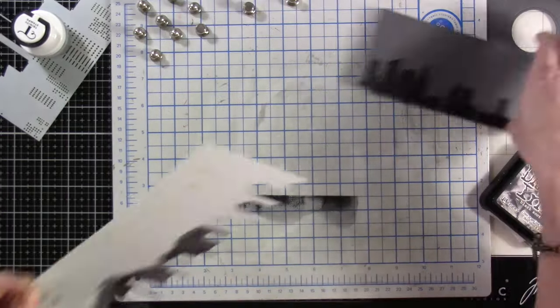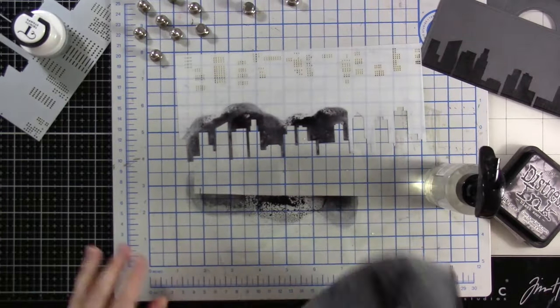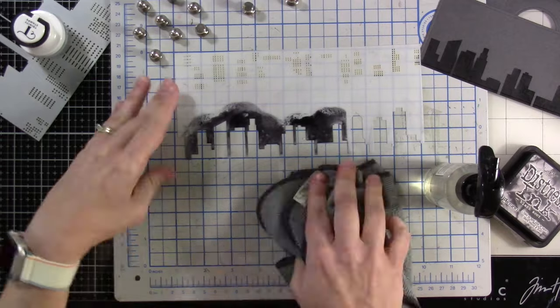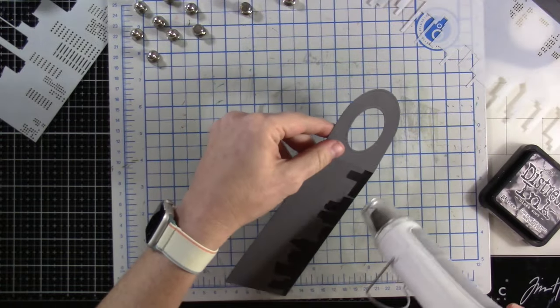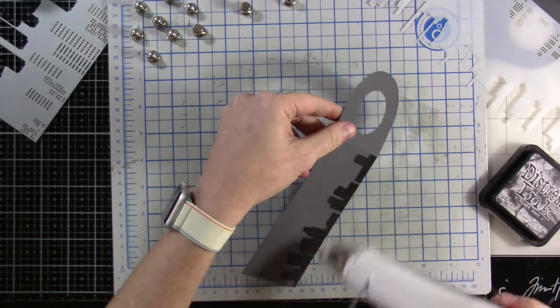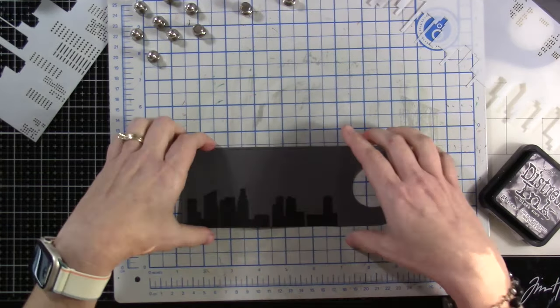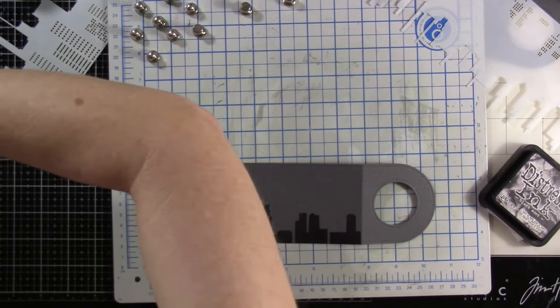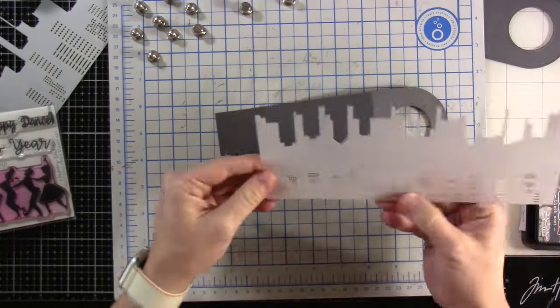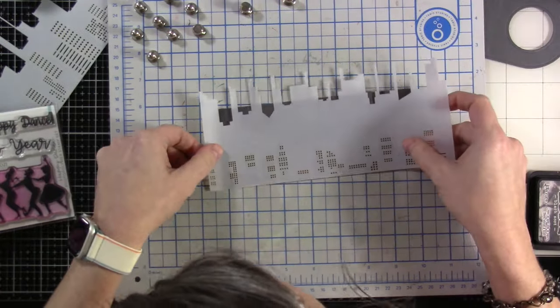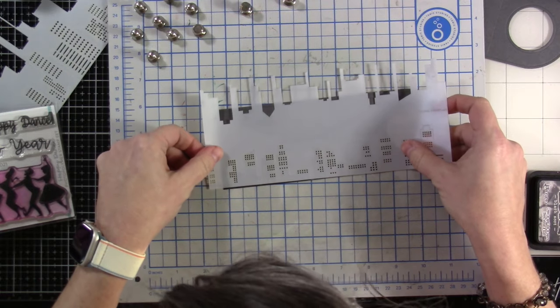So we're blending that on our background. I do have a couple areas where the stencil kind of moved just a tiny bit, so I'll have a little bit of fuzziness, but I'm going to be doing enough to that background that you're not really going to be paying attention to that. So I'm going to clean up this stencil because I need it again.